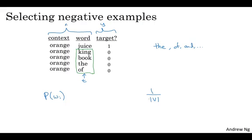So the authors, Miklov et al, reported that empirically what they found to work best was to take this heuristic value, which is a little bit in between the two extremes of sampling from the empirical frequencies, meaning from whatever is the observed distribution in English text to the uniform distribution. And what they did was they sampled proportional to their frequency of a word to the power of three fourths. So if f(w_i) is the observed frequency of a particular word in the English language on your training set corpus, then by taking it to the power of three fourths, this is somewhere in between the extreme of taking uniform distribution and the other extreme of just taking whatever was the observed distribution in your training set. And so I'm not sure this is very theoretically justified, but multiple researchers are now using this heuristic and it seems to work decently well.